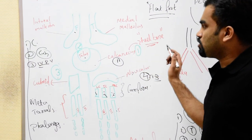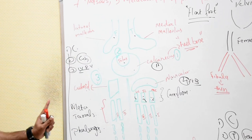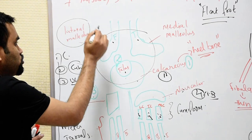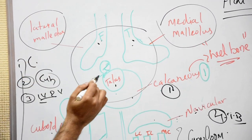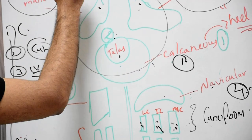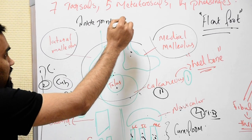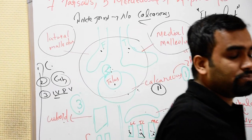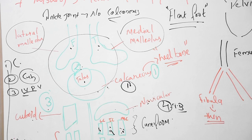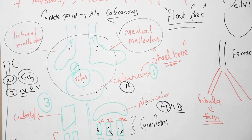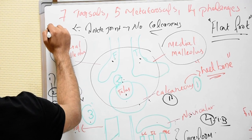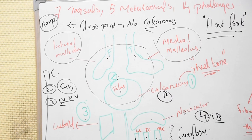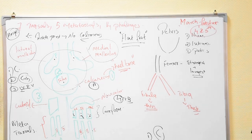Next, we have the ankle joint. The ankle joint is formed by the lateral malleolus of the fibula, the medial malleolus of the tibia, and the talus. That means in the ankle joint there is no calcaneus — remember that as an MCQ point. If asked which bones participate in the ankle joint, the answer is the lateral malleolus of fibula, medial malleolus of tibia, and talus — calcaneus is not included. The ankle joint is a type of hinge joint, and hinge joints allow movement in only one direction.